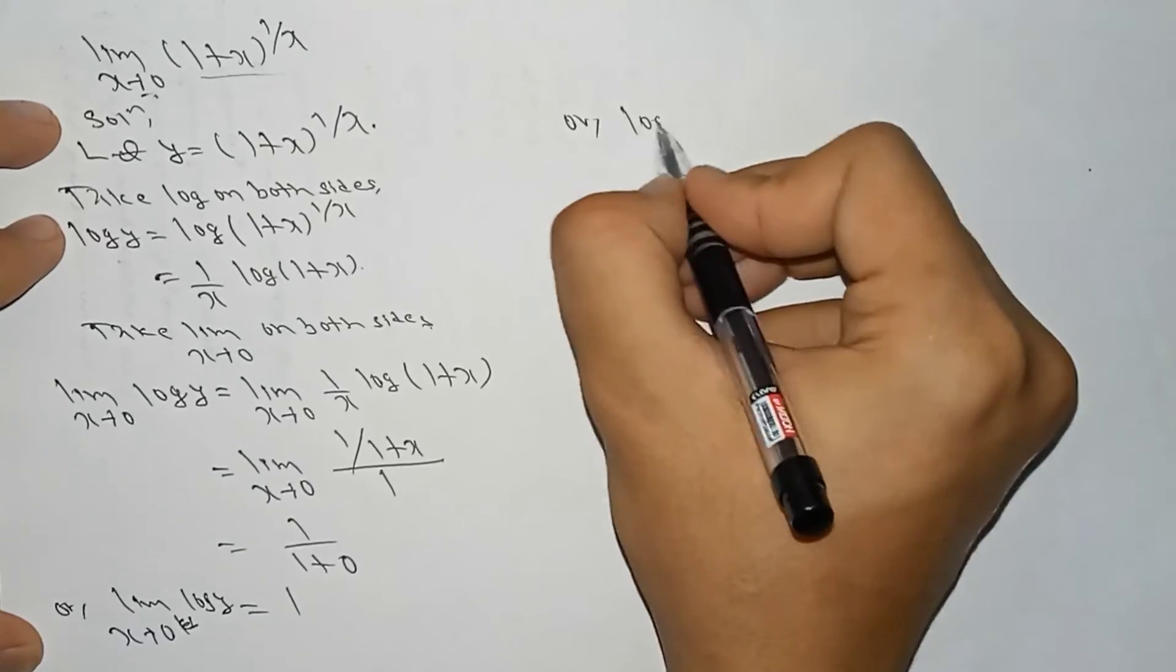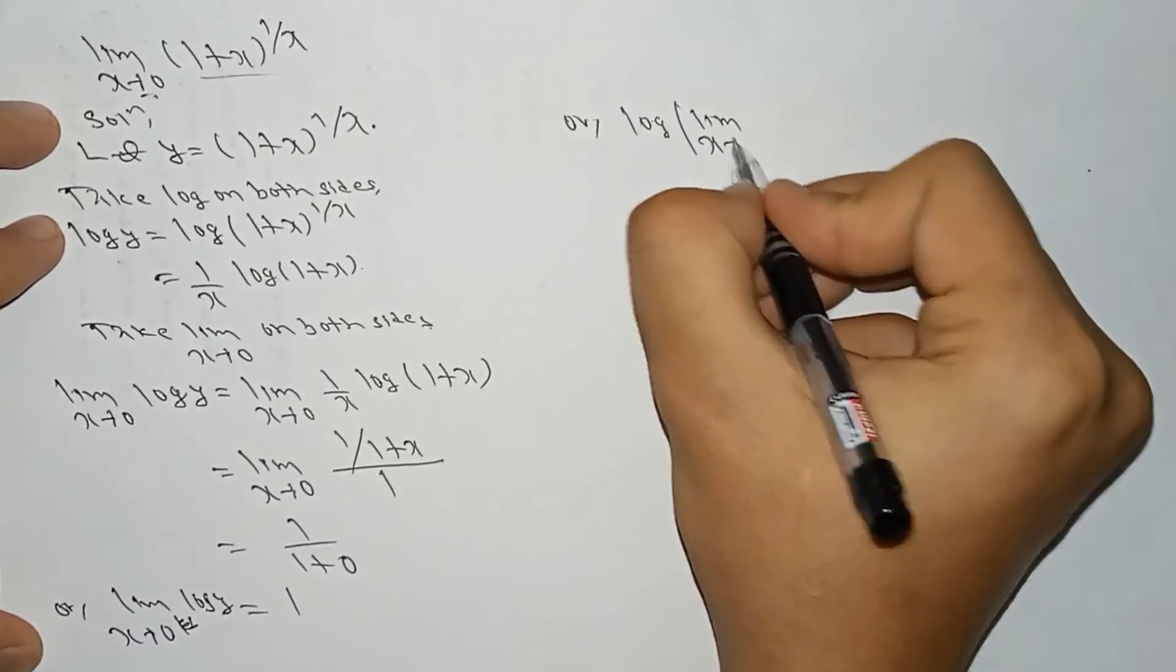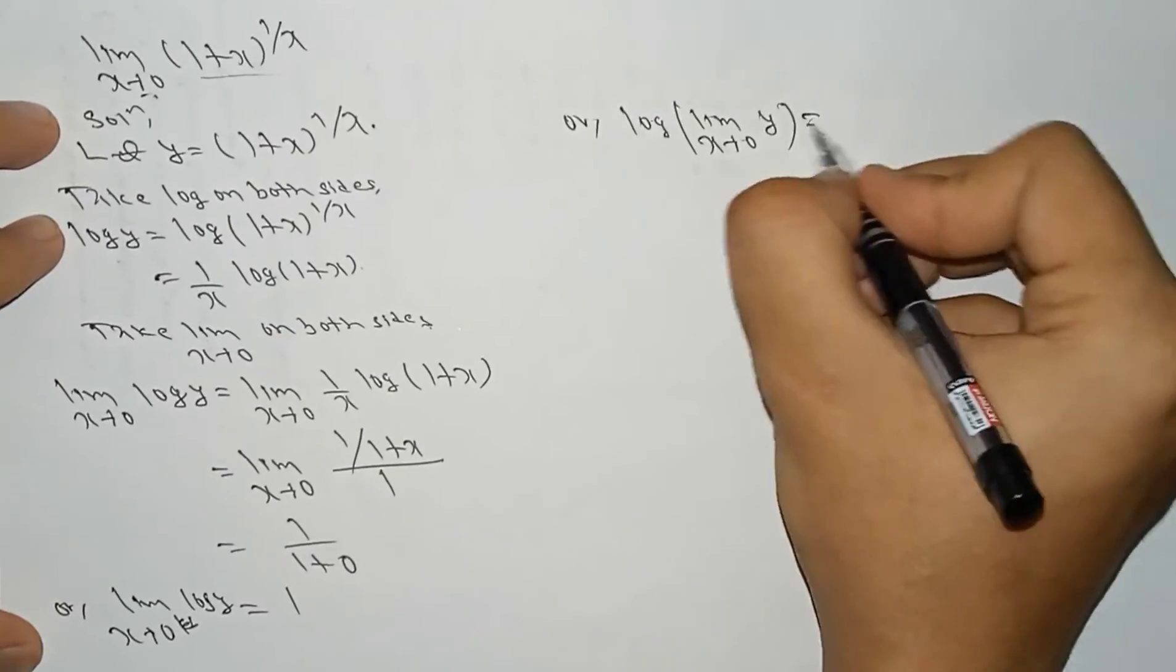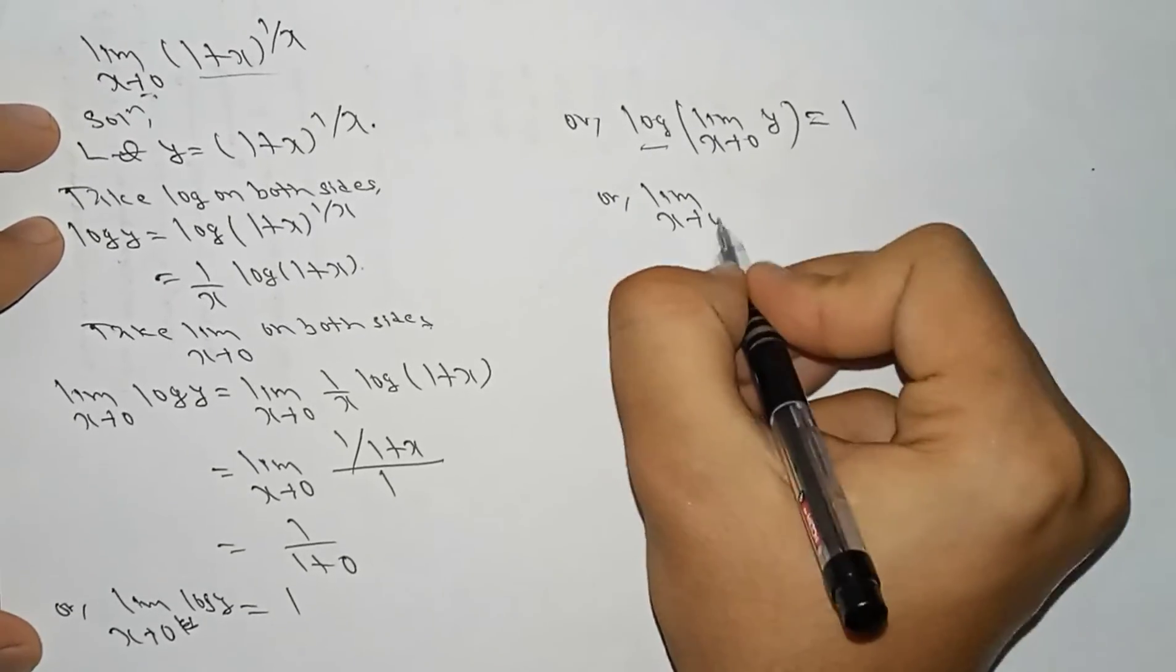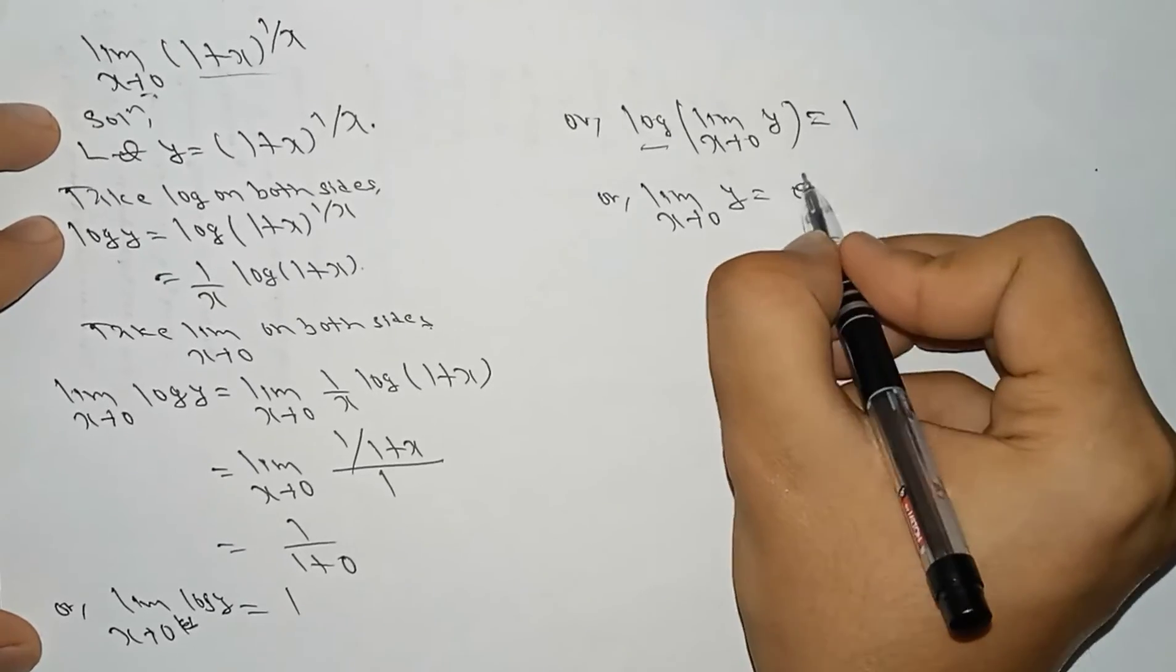...limit x tends to 0 of y equals 1. And to remove the log, we take the exponential term. That is, limit x tends to 0 of y equals e^1. To remove the log, we have taken exponential term.